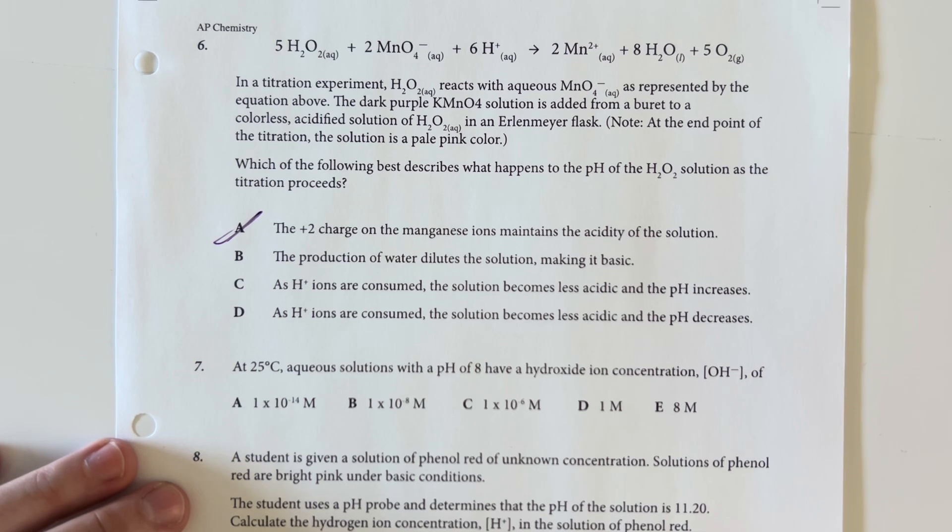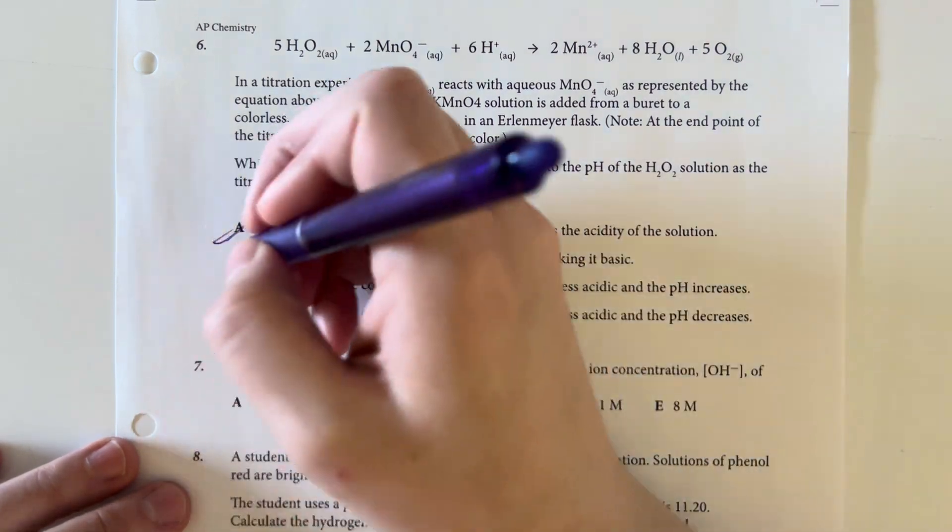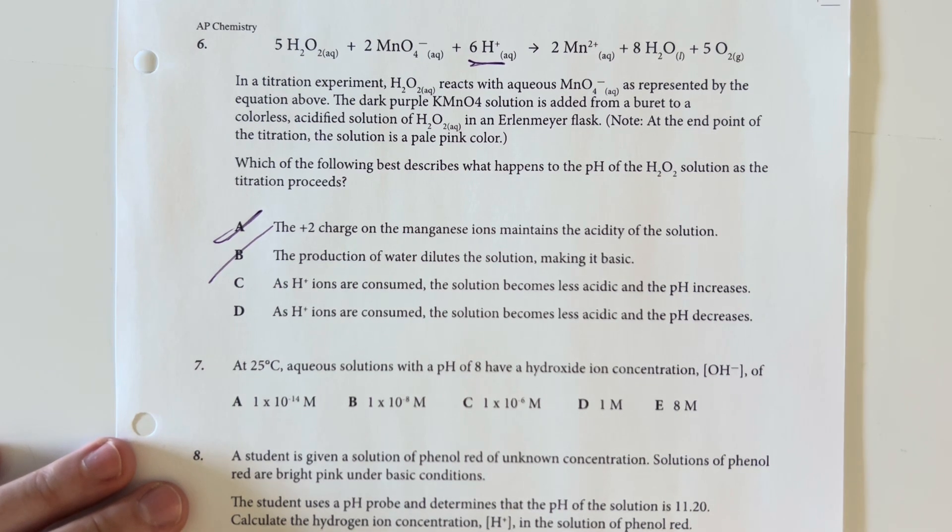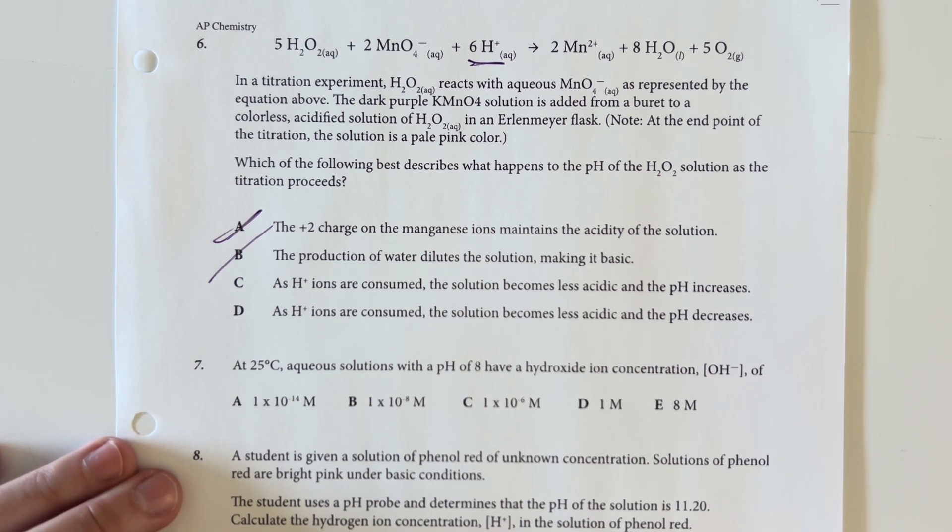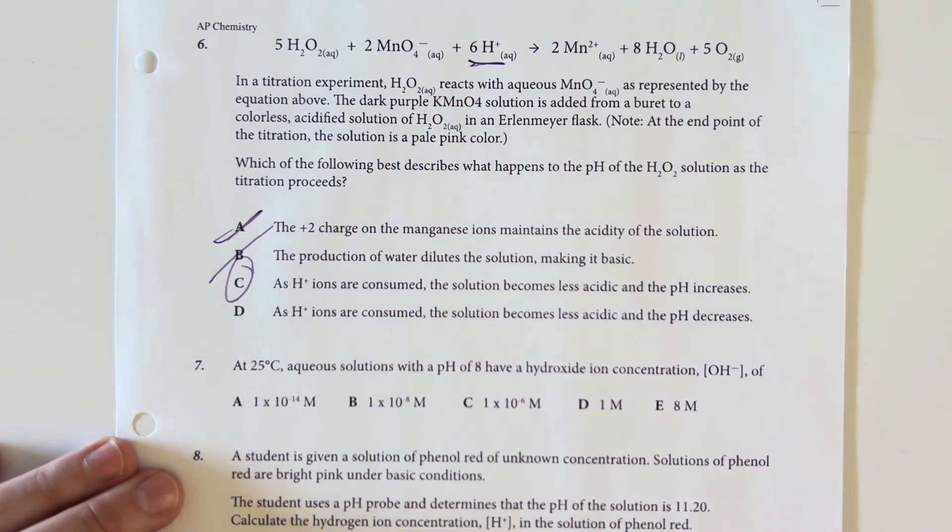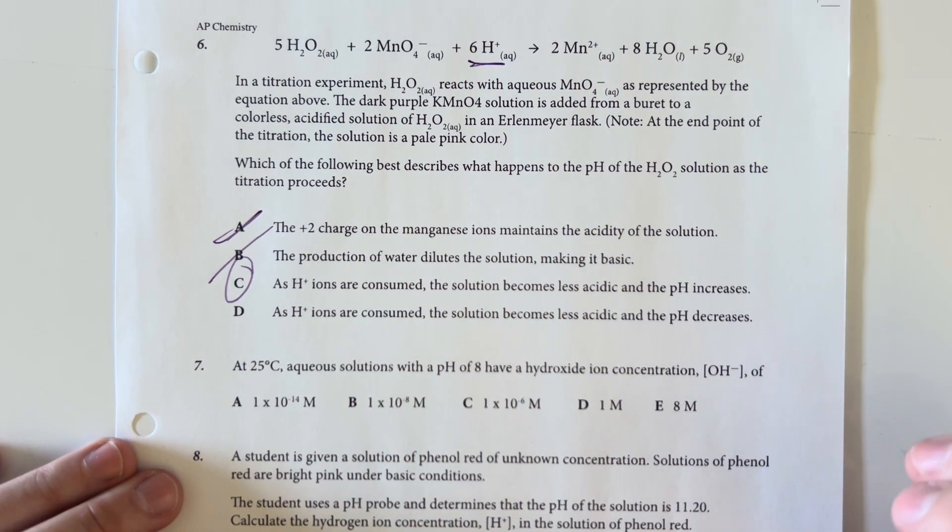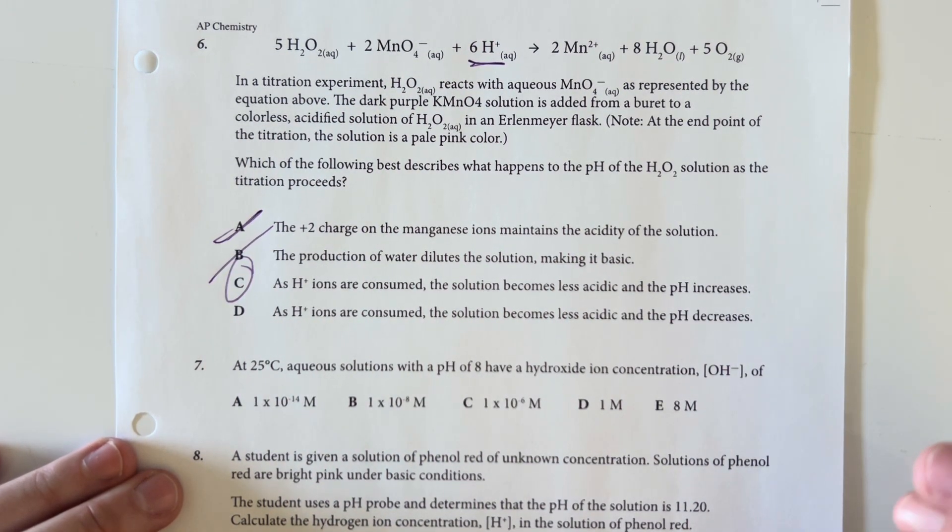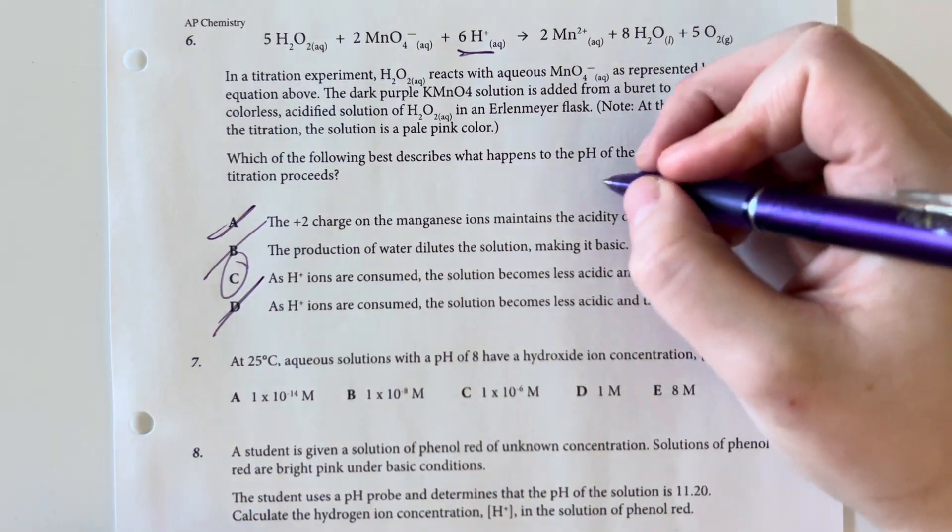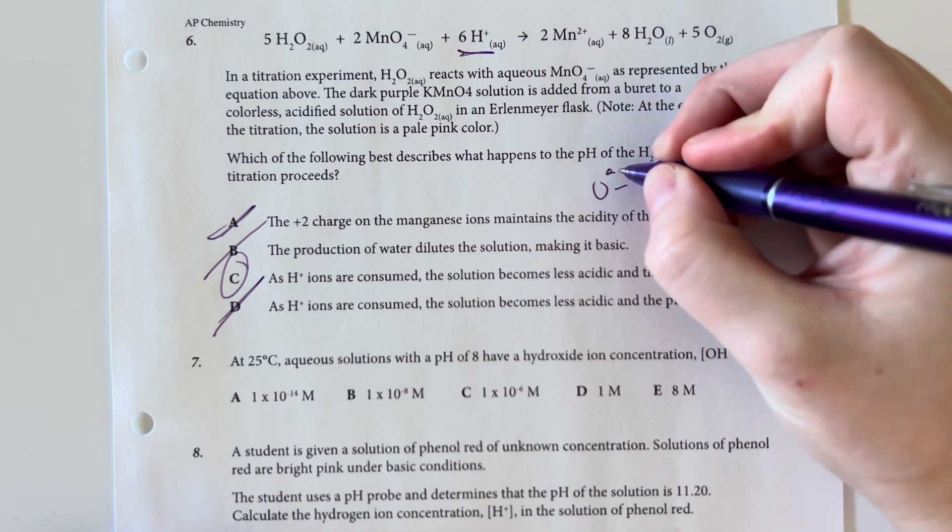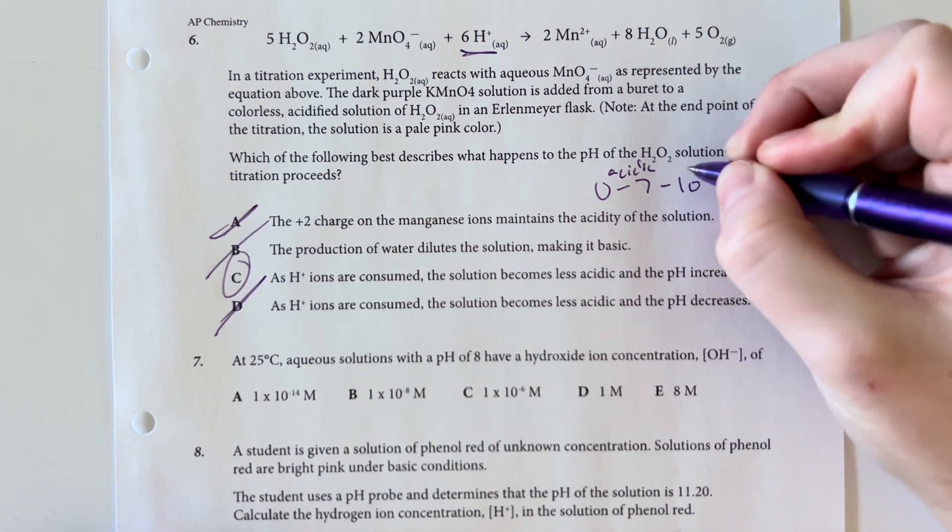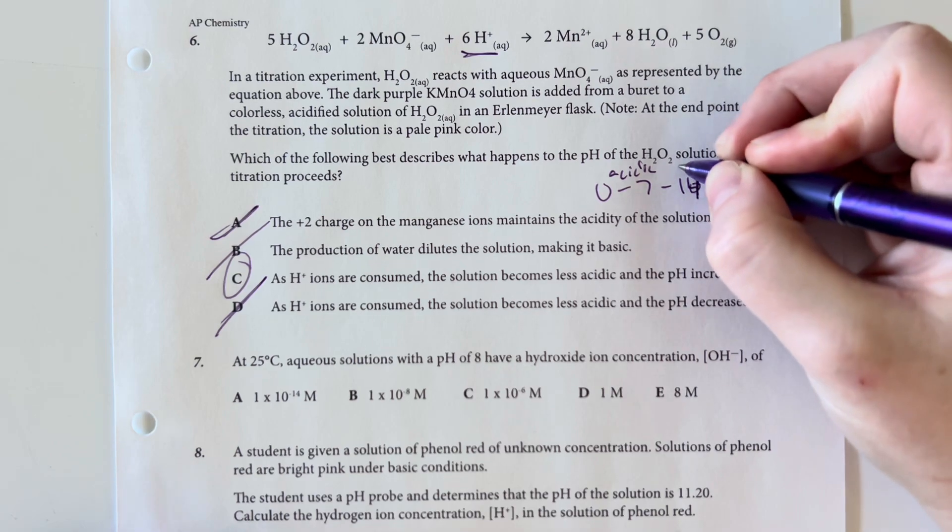The production of water dilutes the solution, making it basic. No, it's the disappearance of the hydrogen ions that would make it more basic. As hydrogen ions are consumed, the solution becomes less acidic and the pH increases. This is correct. And then D says as hydrogen ions are consumed, the solution becomes less acidic and the pH decreases. That's the exact opposite. 0 to 7 is acidic, and 7 to 14 is basic.